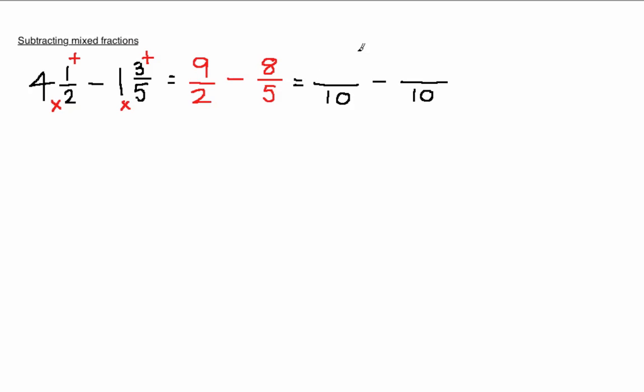And now we need to work out what the numerators of both numbers will be. To get from 2 to 10, you must multiply by 5. So you've got to multiply the top here by 5 as well. 9 times 5 is 45.